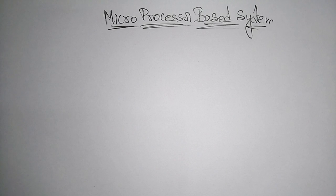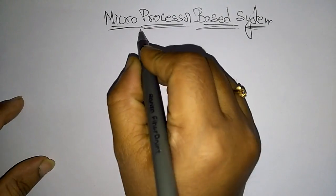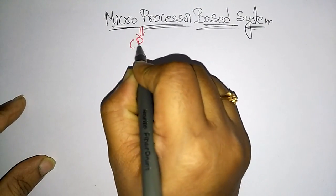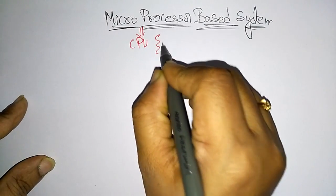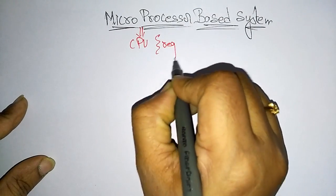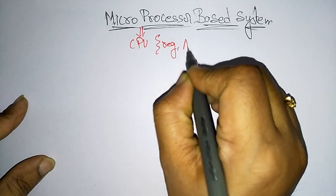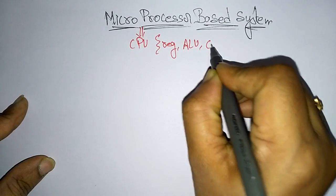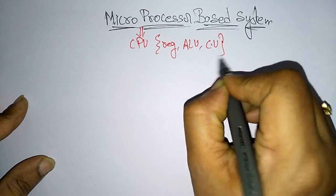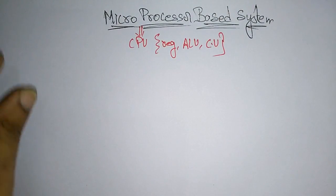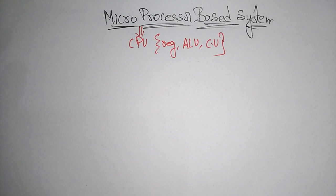Coming to the next topic, that is a microprocessor-based system. A microprocessor is nothing but a CPU — a central processing unit — which consists of registers, an arithmetic logic unit, and a control unit. So that is a microprocessor. What is a microprocessor-based system?